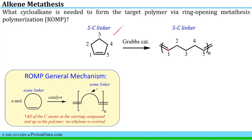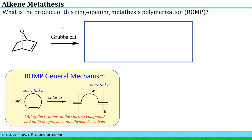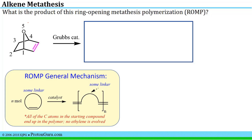We may also be given a more complicated type of starting material. Here we're going to use the Grubbs catalyst to do a ring-opening metathesis polymerization again. In this case it's important to think about the general mechanism: the entire linker — all the carbons in the starting material — will end up in the product, just ring-opened. So we need to identify the double bond that's going to be broken in the starting material, and then number the carbons — and in this case an oxygen as well — in the linker between those doubly-bound carbons.